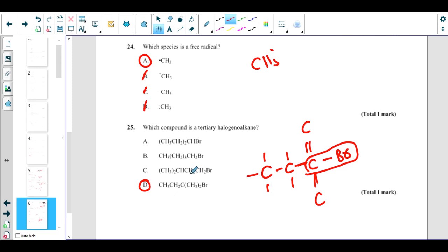None of the others have this. If you draw it, you can draw any one of them, you will not get this. For example, if you have A1, we draw CH3CH2 twice CHBr. So indeed it is like this: CH3, CH2, then you have CHBr, then another CH2, another CH3. So it is not a tertiary halogenoalkane. So D is the correct answer here.